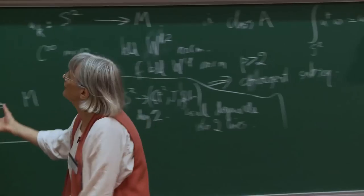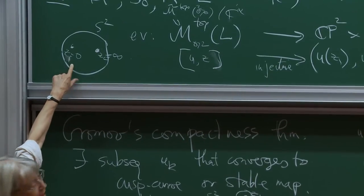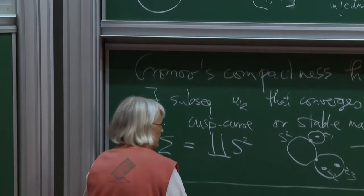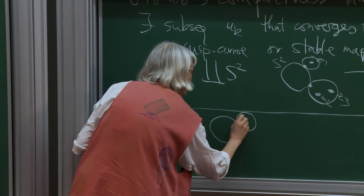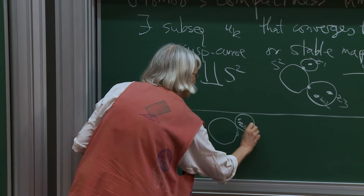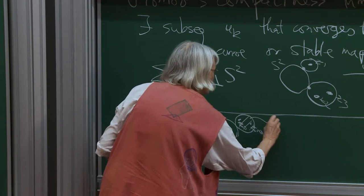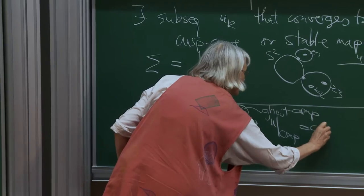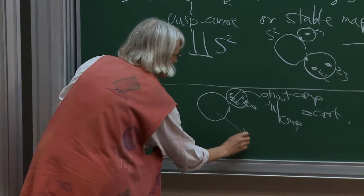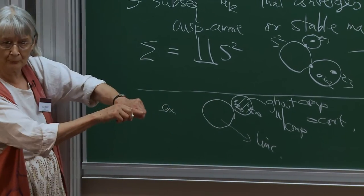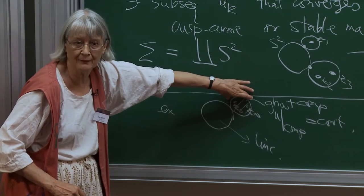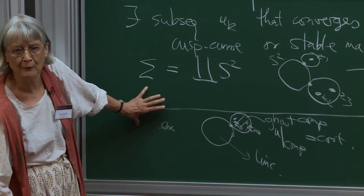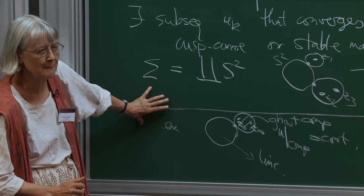Another degeneration occurs when marked points come together. If they do, you could have a bubble containing both marked points. This is called a ghost component — the map U restricted to that component is constant. So you'd have a line mapped here with two marked points sitting on a sphere which is the ghost component. I should give a proper definition of a stable map so you can put all these together into the space of stable maps.